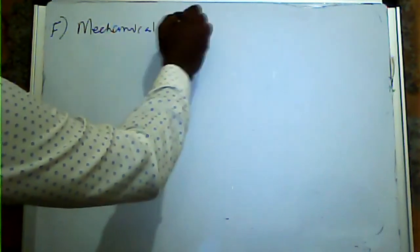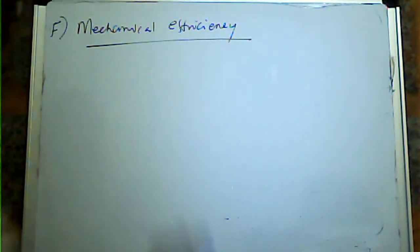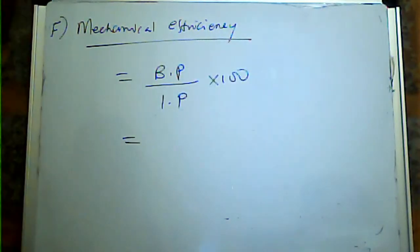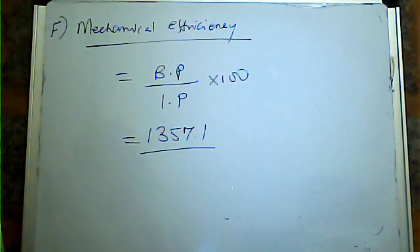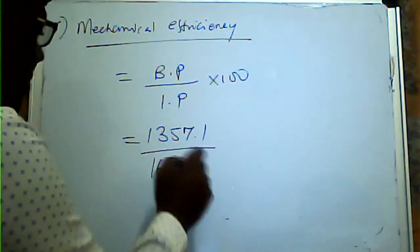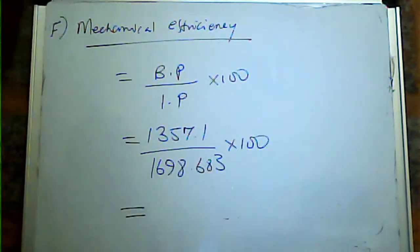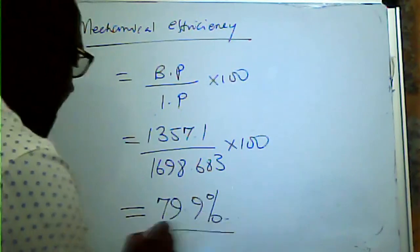Mechanical efficiency — very simple: BP over IP times 100. So 1357 over 1698.683, multiplied by 100 = 79.9%. That is the mechanical efficiency.